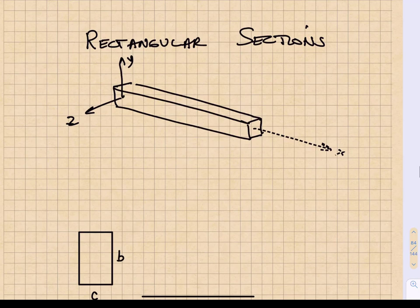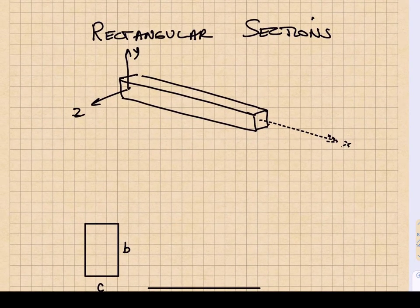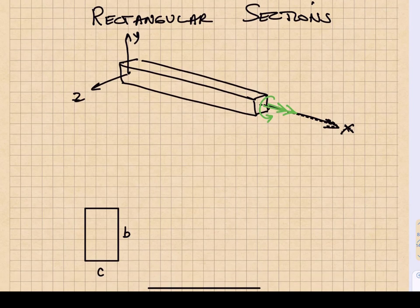So what if we have a rectangular cross section? I show here a bar, a long bar with a rectangular cross section aligned with the x-axis. Let's go ahead and apply a positive torque to this thing, a positive x-directed torque. That would be this direction right here. And that would be exposing this to a rotation that would be counterclockwise if you were looking down the x-axis.